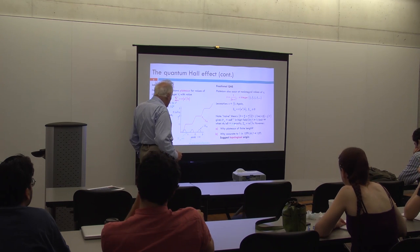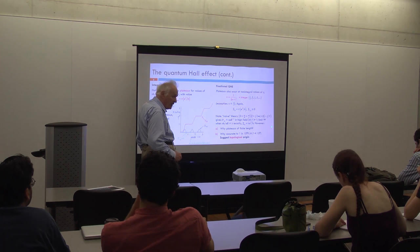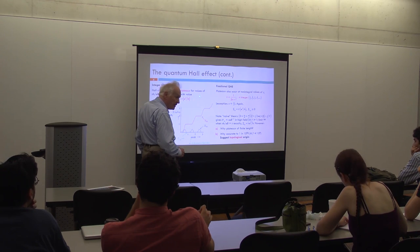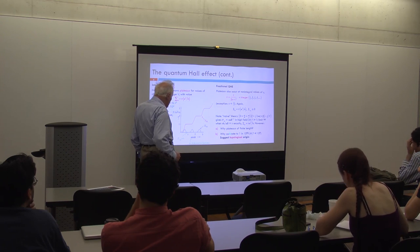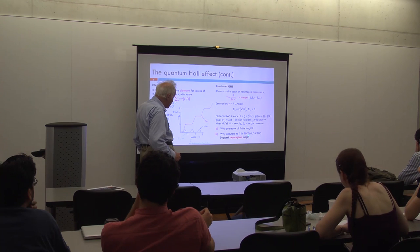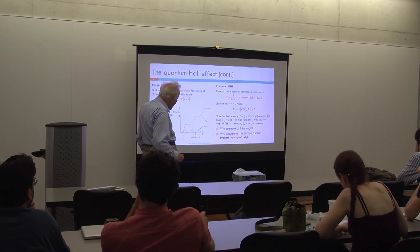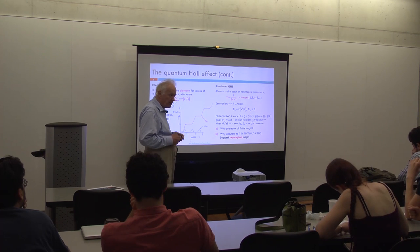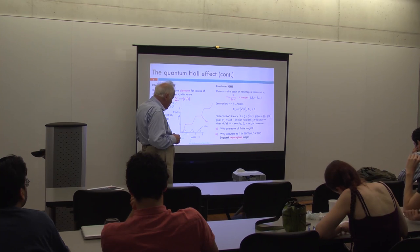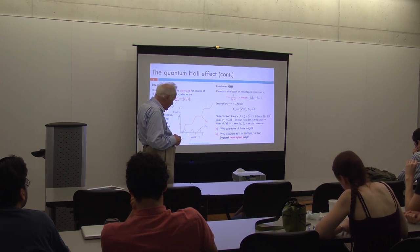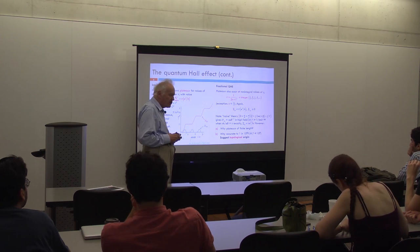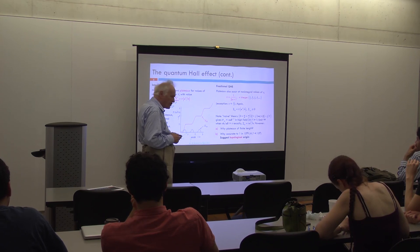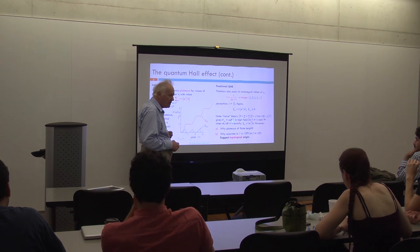However, there are two major problems. First, why are the plateaus of finite width — that is, why does this still hold even when ν is not exactly an integer? Second, why should this formula apparently be accurate to one part in 10⁸, considering that ω_c τ is always much less than that — you'd expect corrections of order 1/(ω_c τ)? These two features suggest with some hindsight that the quantum Hall effect must be topological in origin; it has to be more robust than a simple classical semiclassical consideration.